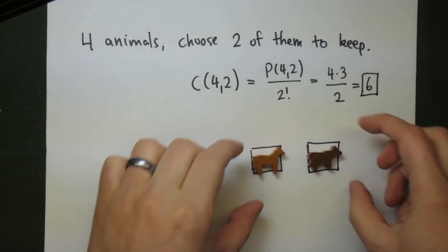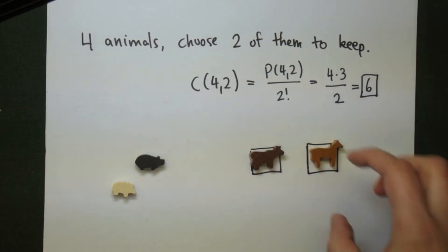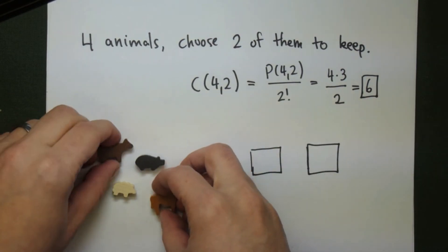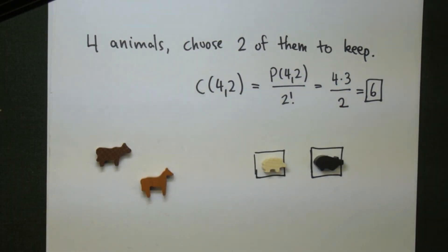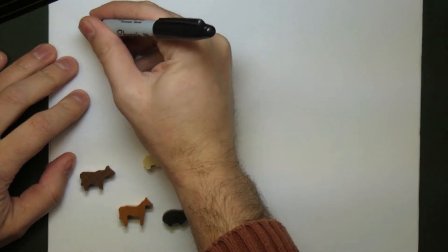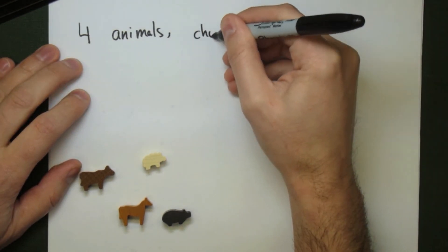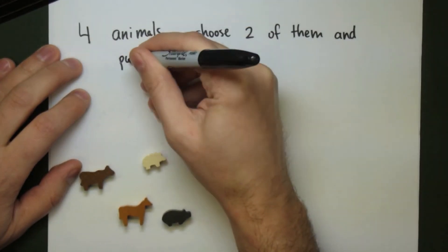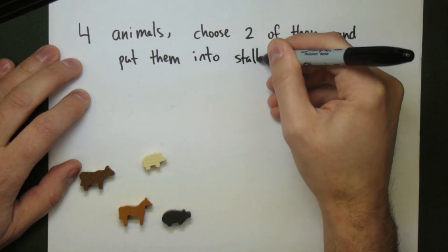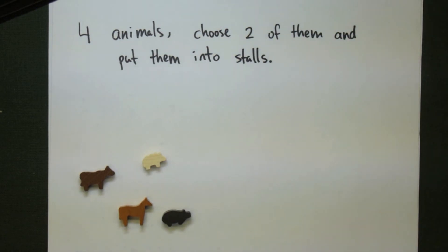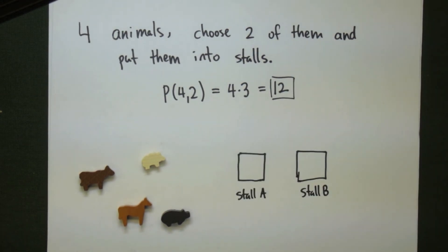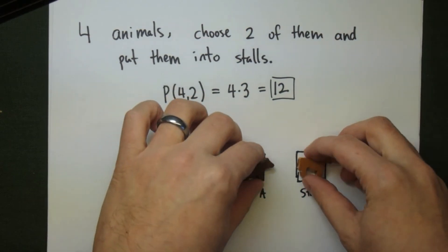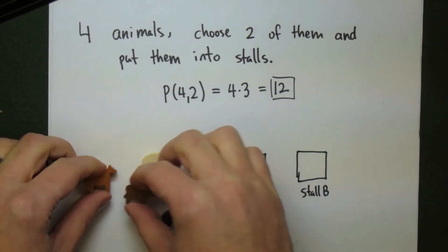Now for a related problem: we have four animals and we want to choose two of them, but we're going to put them into specified stalls. In this case we have two stalls, and it matters which animal goes into which stall. Because the order matters, we're going to use the permutation: P(4,2) is just 4 times 3, or 12. So there are 12 ways of doing this. Looking at stall A and stall B, cow-then-horse is different from horse-then-cow, which confirms the order matters. Here are the 12 ways.